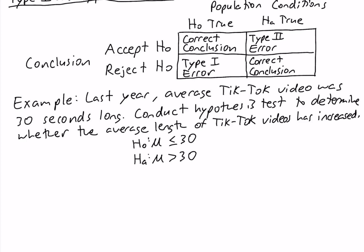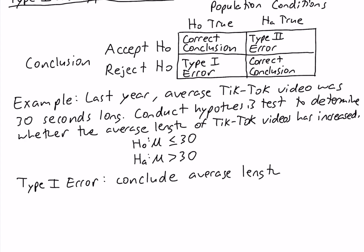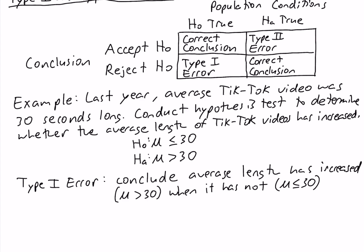Now let's take a look at what a type 1 and type 2 error are in this example. A type 1 error is rejecting the null when the null is true. If we reject the null in this example, that means we conclude that the population mean is greater than 30. And the null hypothesis being true means the population mean is less than or equal to 30 — so we'd be concluding the average length has increased when actually it has not. That would be a type 1 error.